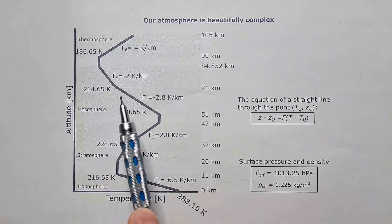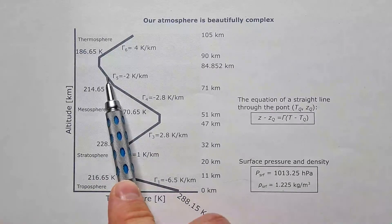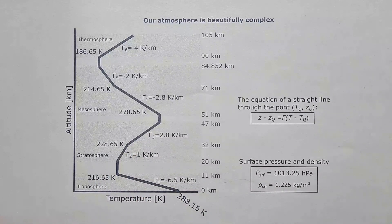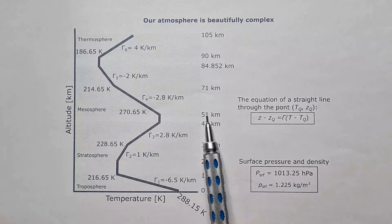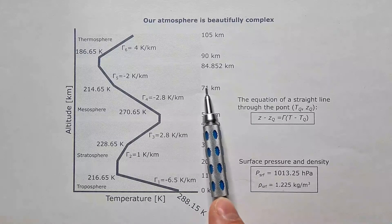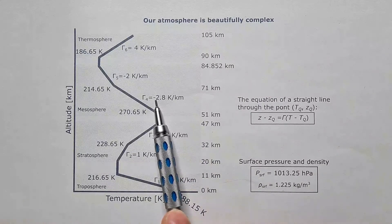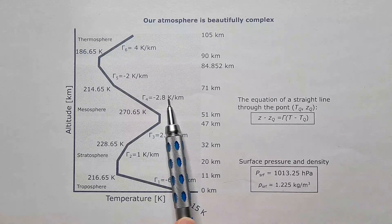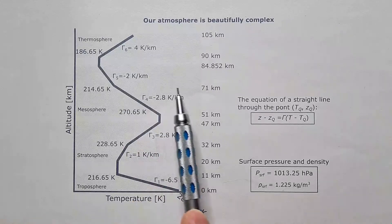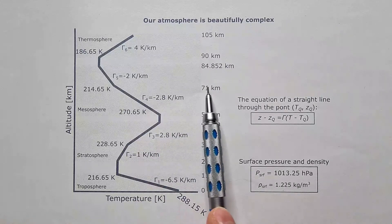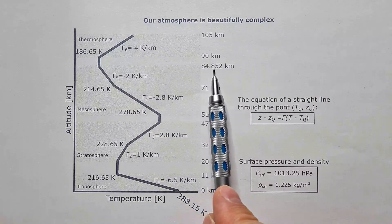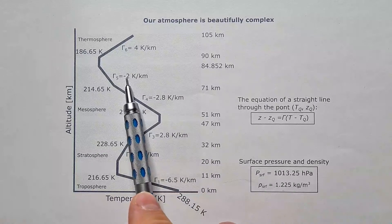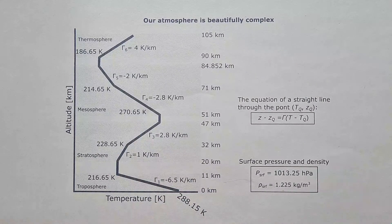In the mesosphere, we again have two different gradients, but both are negative. First, between 51 and 71 kilometers above the surface, temperature is decreasing at minus 2.8 kelvins per kilometer. And then between 71 and approximately 85 kilometers, it is decreasing at minus 2 kelvins per kilometer.